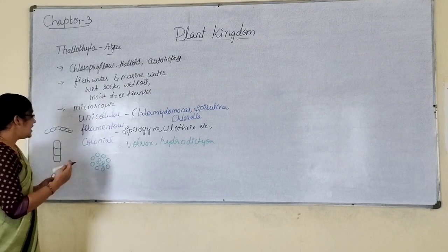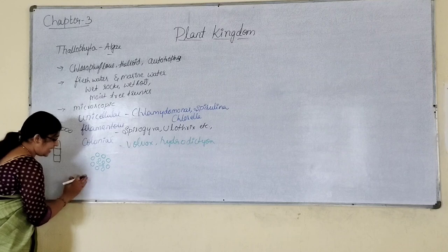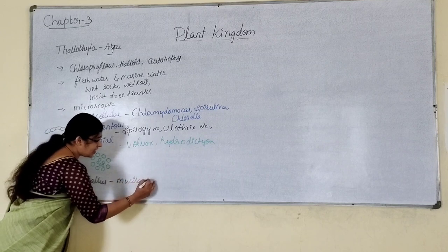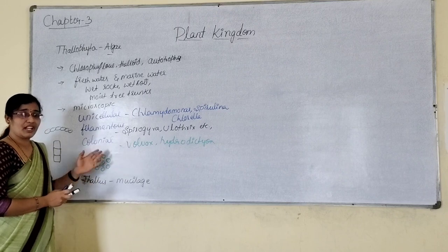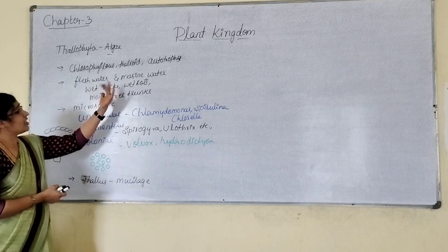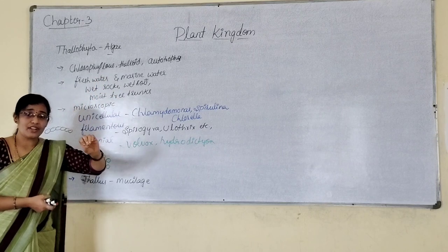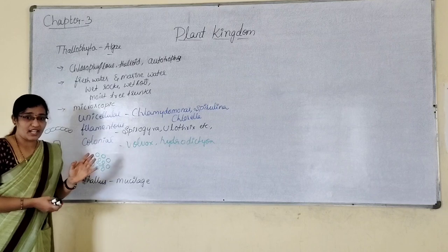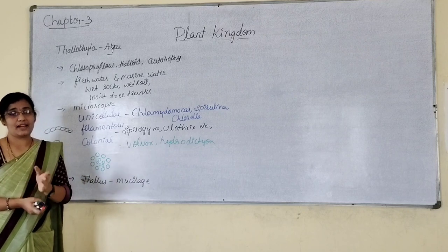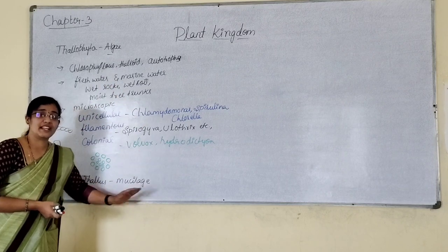The body of the algae — the thallus — is covered by a mucilaginous sheet. The purpose of this mucilaginous covering is to avoid decay. As algae are mostly found in water places or water bodies, there is a high chance of the plant body getting decayed, but to avoid that, the body of algae is covered by a mucilaginous sheet.